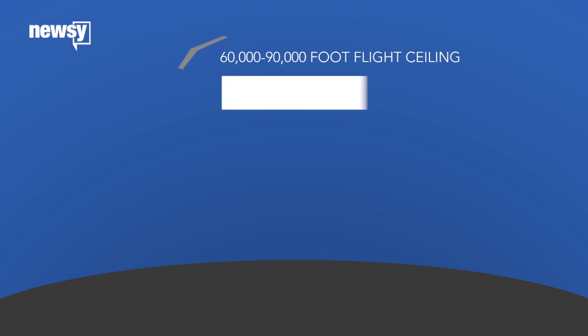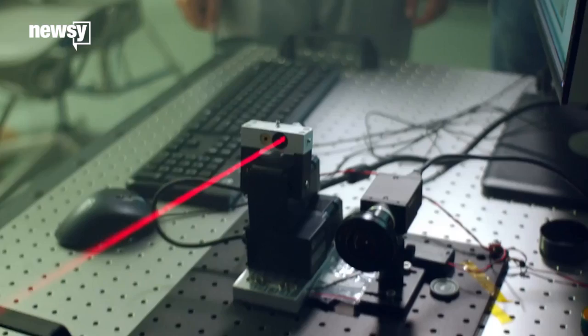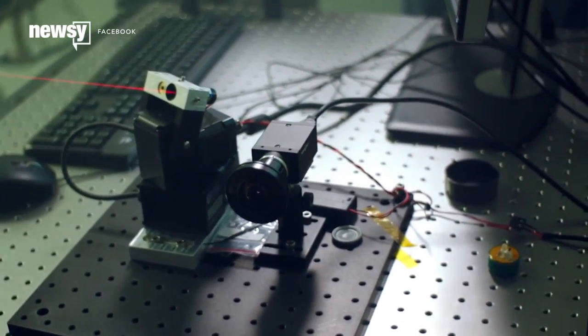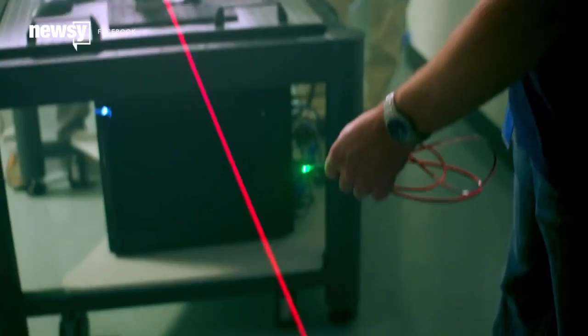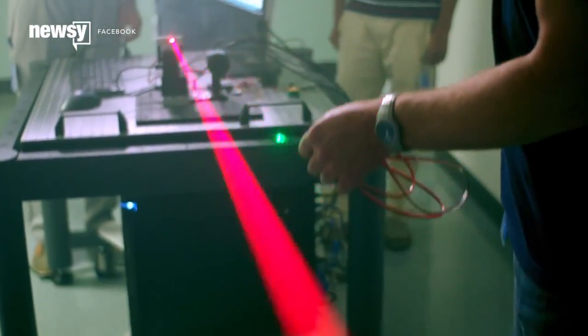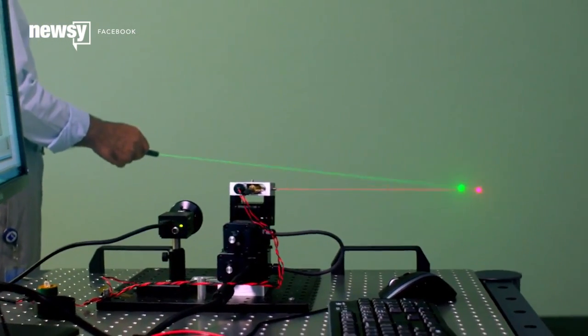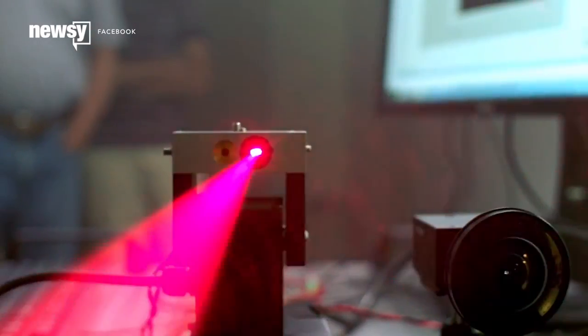Facebook intends to supply it with a laser-based data link. Its engineers are developing a system that can send and receive tens of gigabits of data a second to and from dime-sized targets 10 miles away. They say that's 10 times more advanced than the previous state-of-the-art.